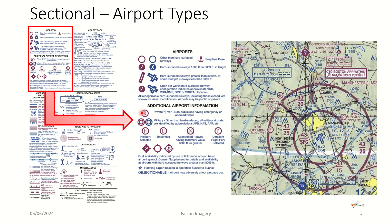Other symbology: an R inside a circle means it's a private airport. Two concentric circles, either magenta or blue, represent military airports. There's also H for helicopter, U for unverified, an X across the symbol if the airport is closed, and F for ultralight flight park. The little tick marks around an airport symbol represent that there are services there, such as fuel and maintenance.